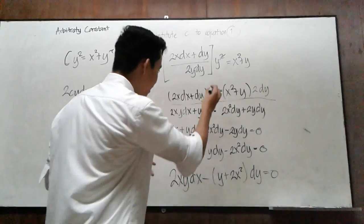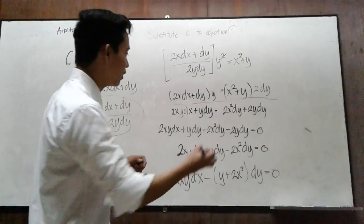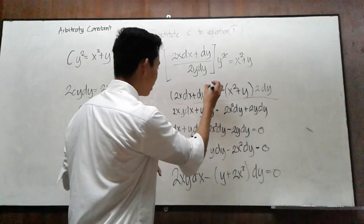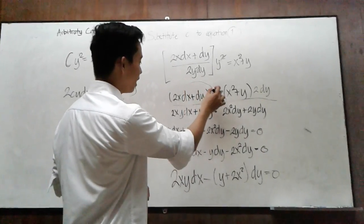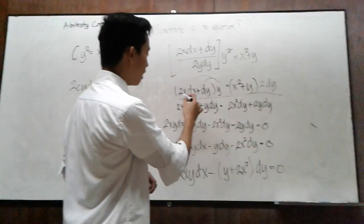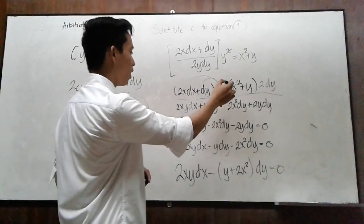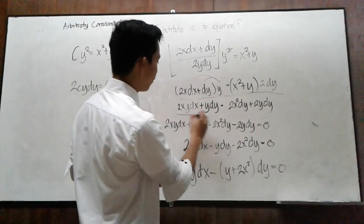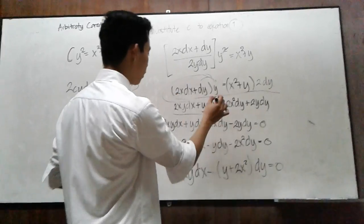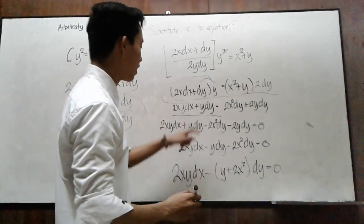In this type of equation, you simply multiply each term. Multiply y by 2x dx and y by dy. So this gives 2xy dx plus y dy.